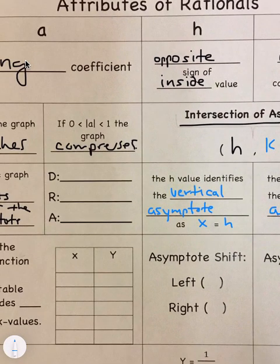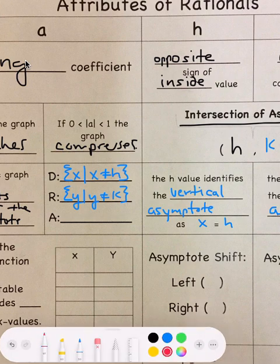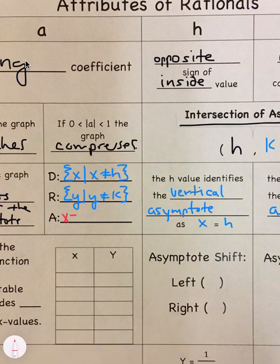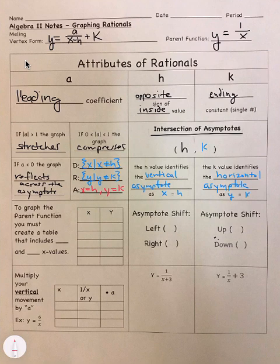And so when we look at our domain, it's the set of all x's such that x cannot be equal to h. So it can't equal that asymptote. The range is a set of all y's such that y cannot be equal to k, excuse me. And then our asymptotes are at x equals h and y equals k. So that's taken into account. H and k, even though h moves things left and right, it's a vertical asymptote. k moves things up and down. That asymptote is actually a horizontal asymptote.